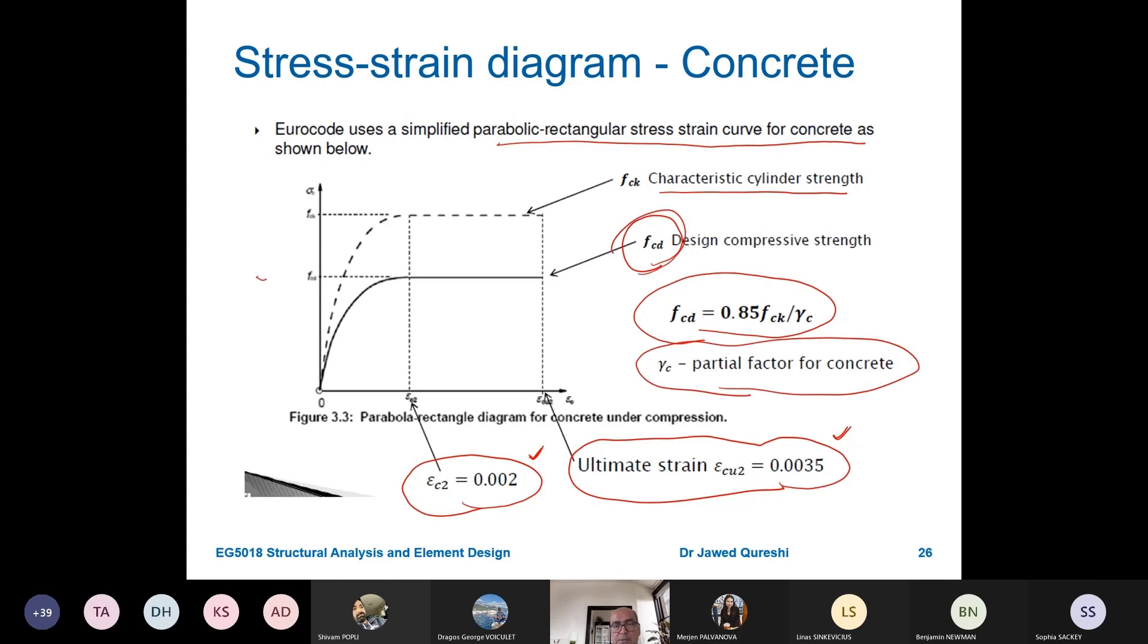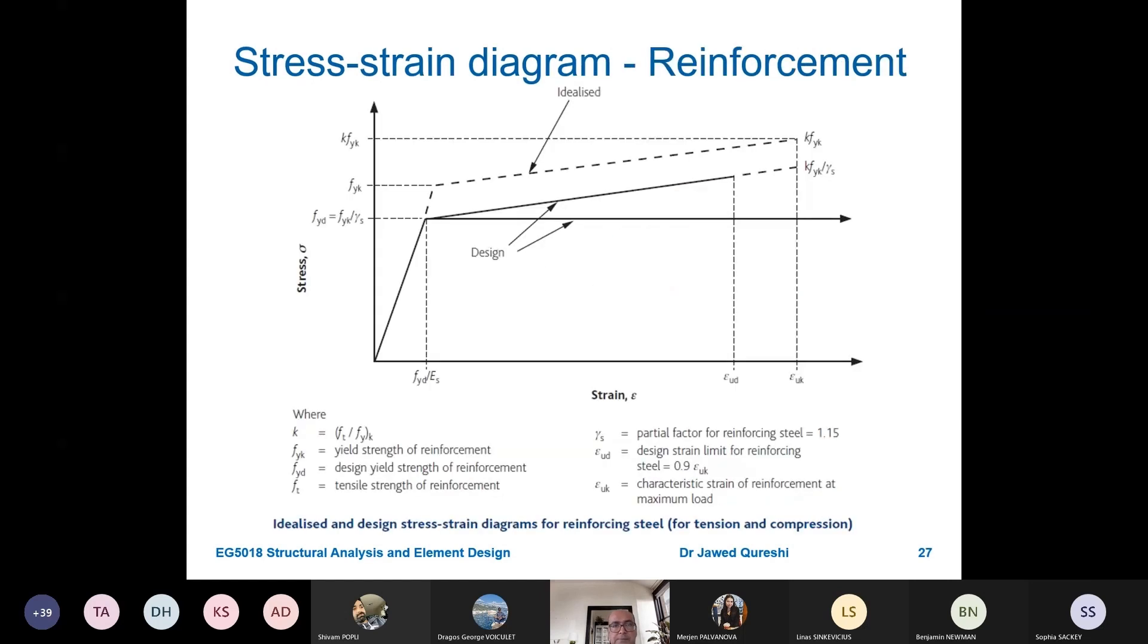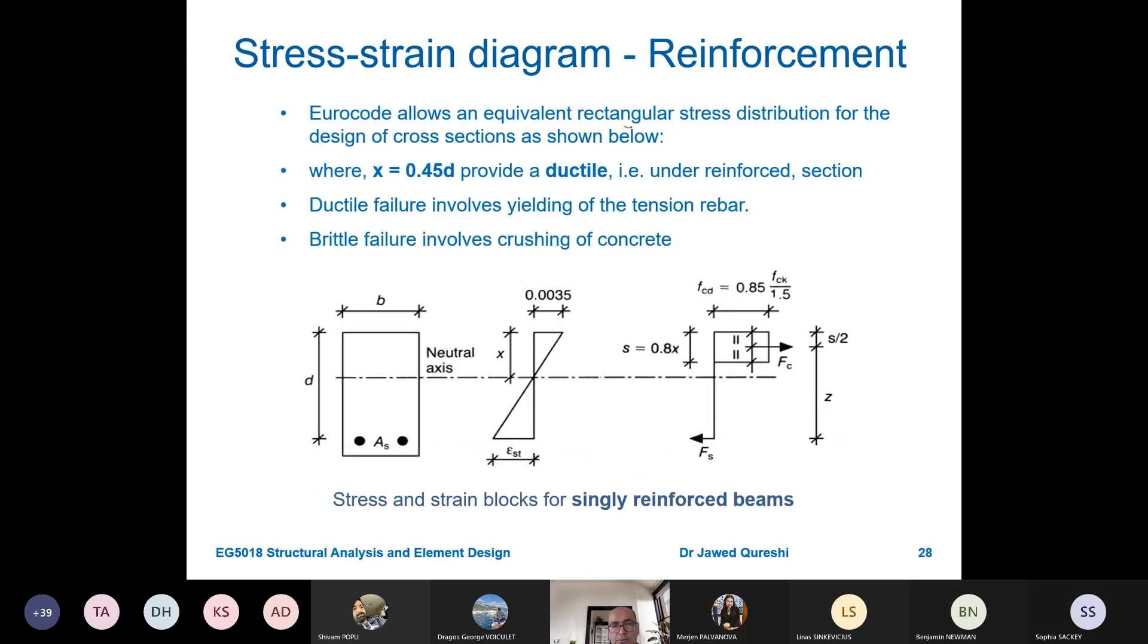We will use this design compressive strength. And again a stress strain diagram for reinforcement. It's fy, again this is fyd means design yield strength. Certainly it is less than the actual characteristic strength of steel. This is the idealized stress strain diagram for reinforcing steel, not the structural steel.